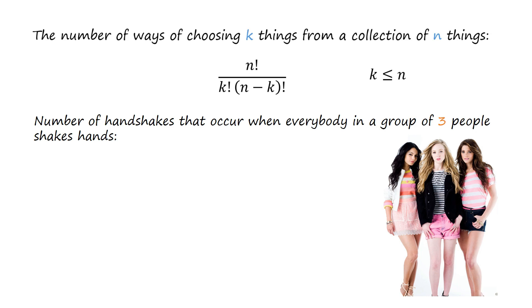Now let's consider the scenario where we want to calculate the number of handshakes that occur when everybody in a group of 3 people shakes hands. Here n equals 3, and since a handshake requires 2 people, k equals 2. Keeping the values of n and k in the above formula, the total number of handshakes computes to 3.